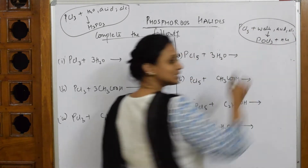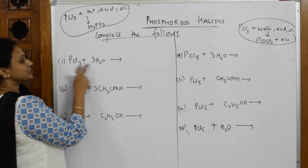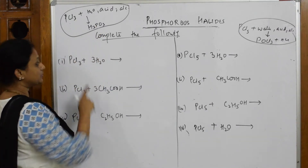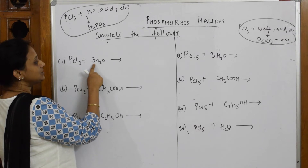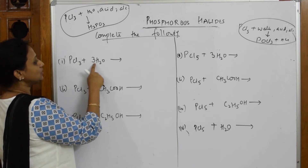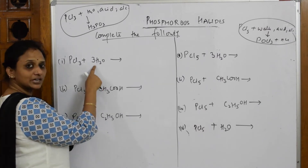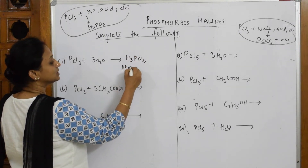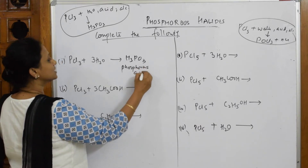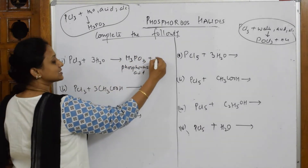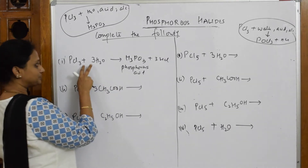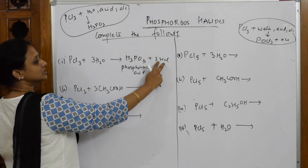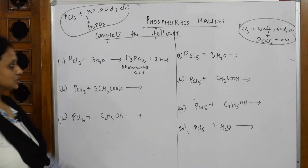Starting with PCl₃ plus water: the product you get is H₃PO₃. H₃PO₃ already has three oxygens and three hydrogens, so write phosphorous acid. What else is left? You are left with three HCl. Three chlorines, three hydrogens — so this is balanced. The product is phosphorous acid.